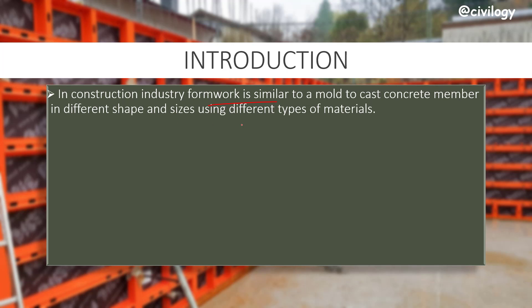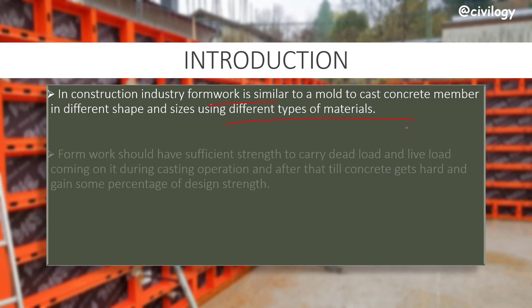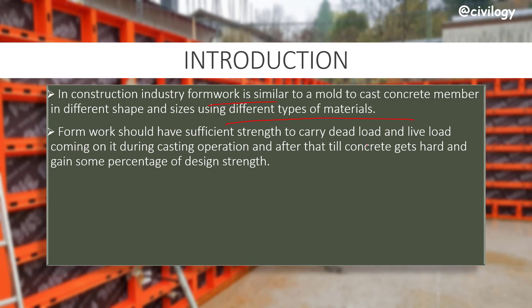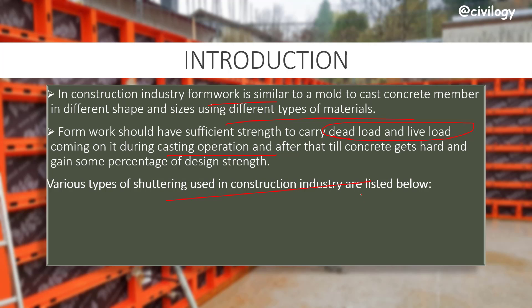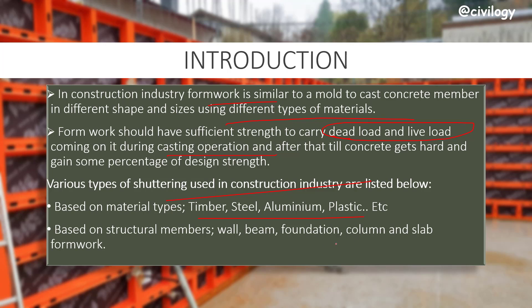Formwork should have sufficient strength to carry dead load and live load coming onto the casting operation, until the concrete gets hardened and gains some percentage of strength. Types of shuttering used in construction are listed below. Based on material: timber, steel, aluminum, plastic, etc. Based on structural members: wall, beam, foundation, column, and slab formwork.